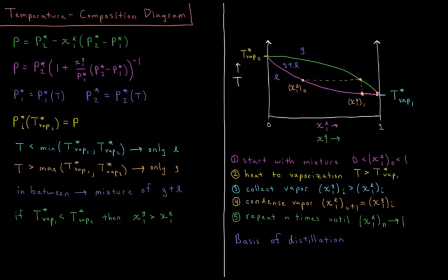This video will discuss temperature composition diagrams for binary mixtures of liquid solutions. We have our total vapor pressure of the system that we looked at from previous videos, as a function of the mole fraction of component 1 in the liquid phase and the mole fraction of component 1 in the gas phase. The total vapor pressure equals the vapor pressure of pure liquid 2 minus the mole fraction of component 1 in the liquid phase times the difference P2* minus P1*.